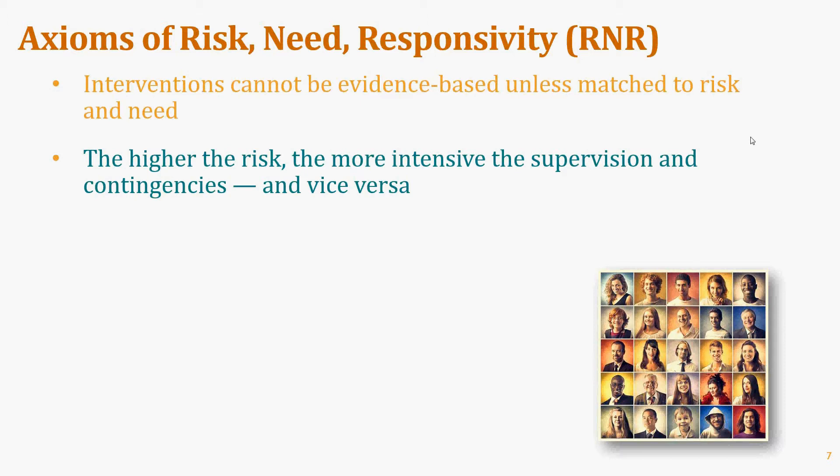Risk and need are both extremely contagious. If you take a group of high-risk people and put them with low-risk people, you will get a group of high-risk people. The high-risk people will raise the risk level of the low-risk people, while the low-risk people will have no impact on the high-risk people. We would consider it malpractice to have groups that mix high-risk and low-risk offenders, or addicted and non-addicted individuals together.